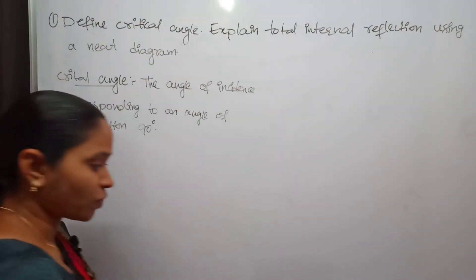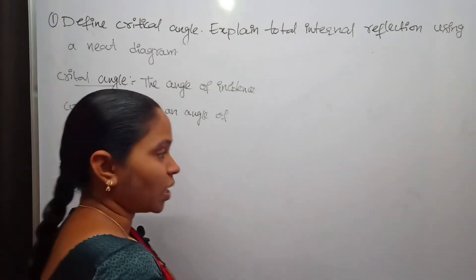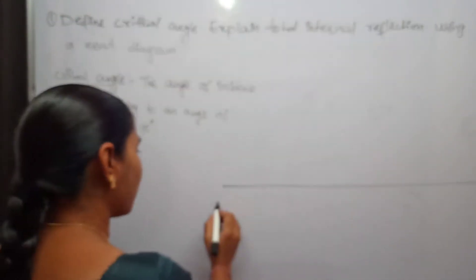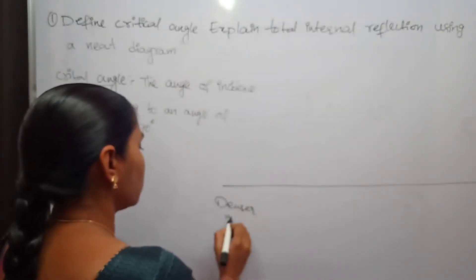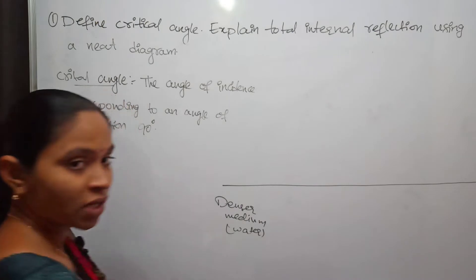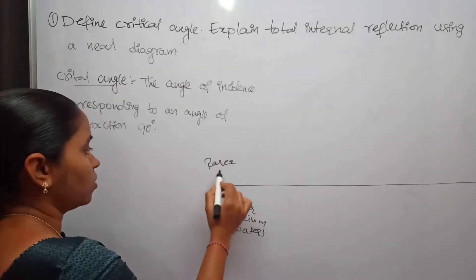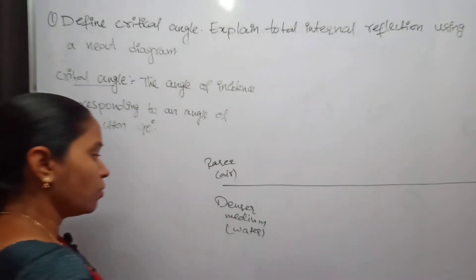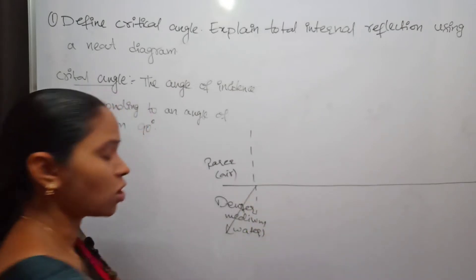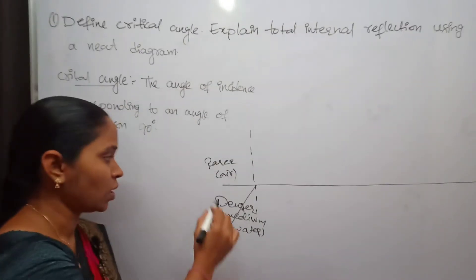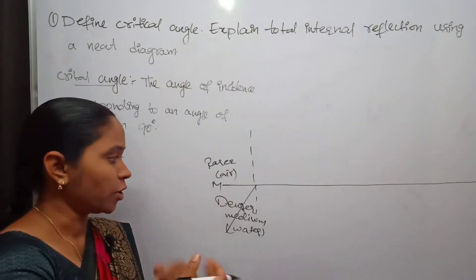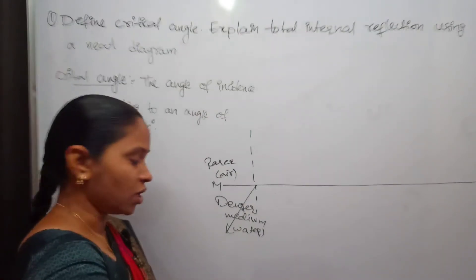With the help of a diagram I am going to explain what is critical angle and what is total internal reflection. If light travels from the denser medium to the rarer medium — the denser medium here is water and the rarer medium is air — this is the normal and MN is the interface between the denser medium and the rarer medium.